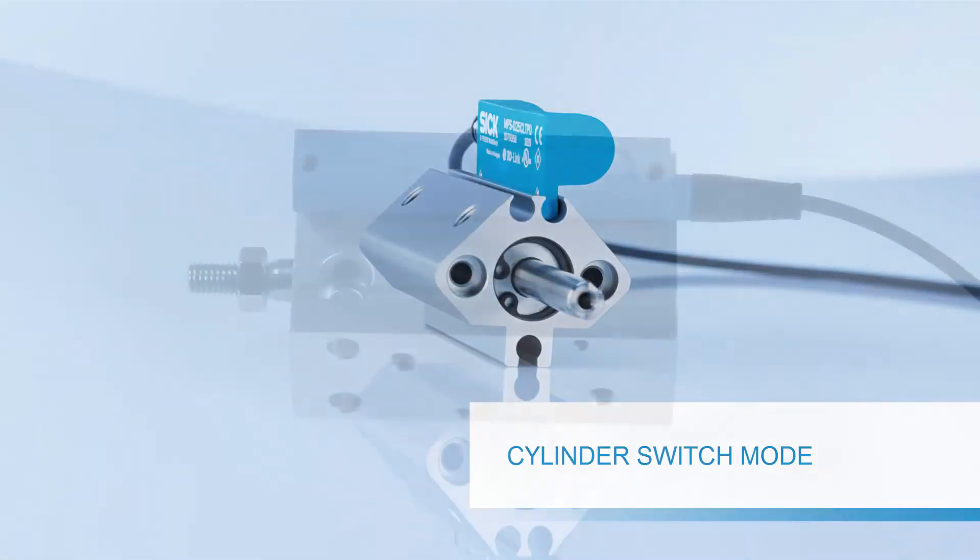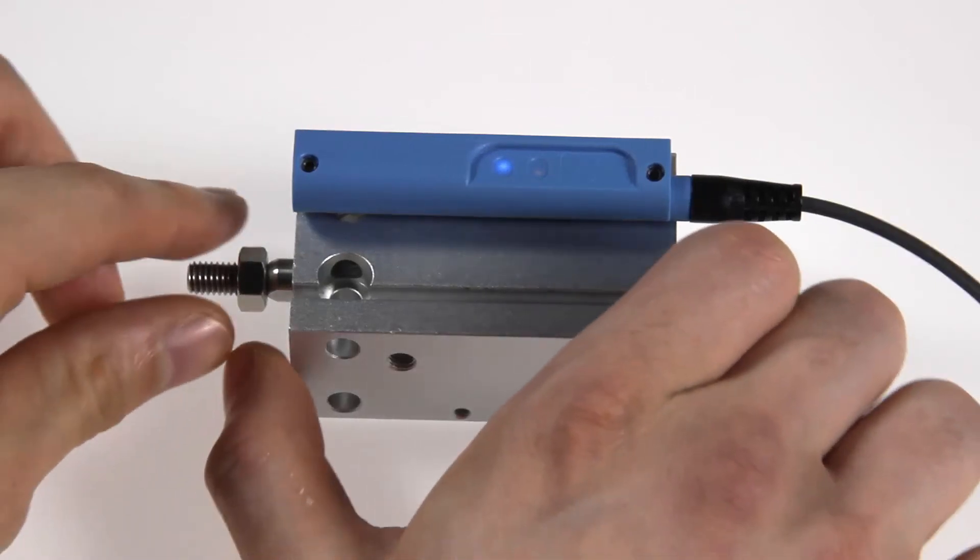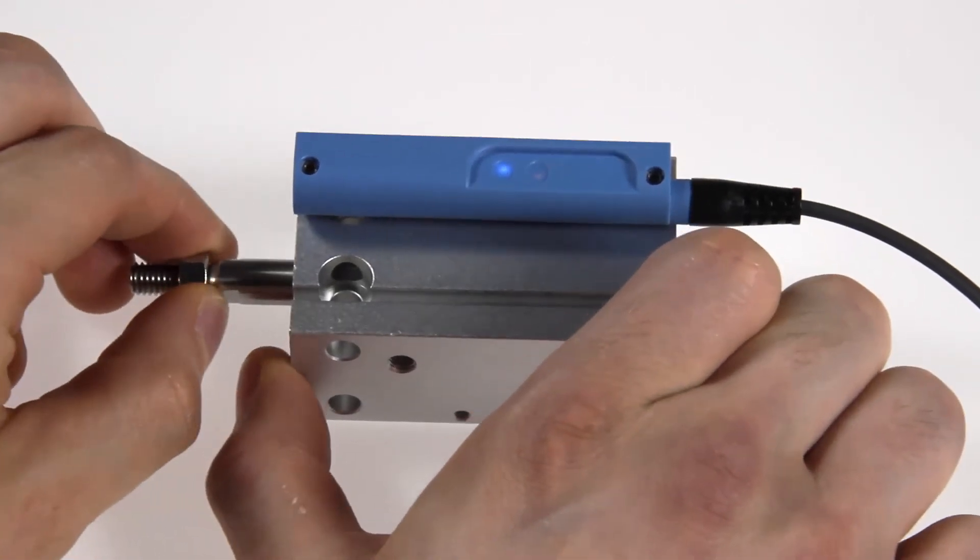Cylinder switch mode. This mode defines a switching point with a hysteresis around the switching point. This mode is similar to what we are used to from standard cylinder sensors. To set the switch point, push the piston in the desired position.